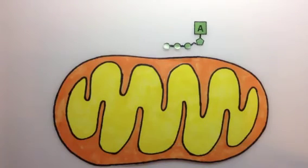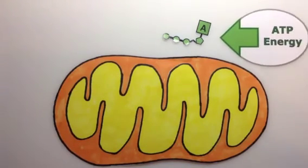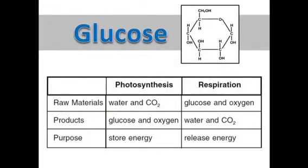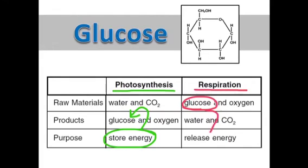That ATP energy can then be used throughout the cell. It's very important to remember that energy is stored inside glucose during photosynthesis. During respiration, the chemical energy in glucose is released by the cell and used to make ATP.